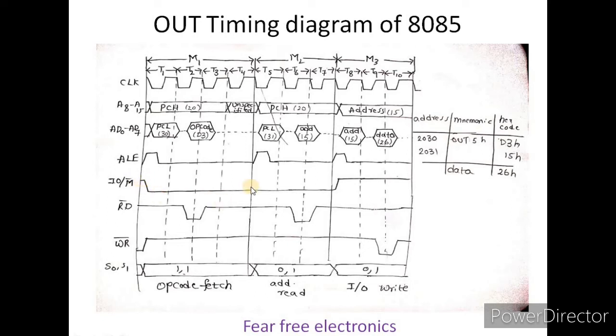The IO/M bar signal is low because we need to access memory. This is the opcode fetch. The memory is active. The read bar signal is 0, meaning read is active. S0 and S1 are status signals. This completes the first machine cycle.